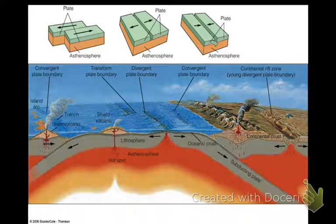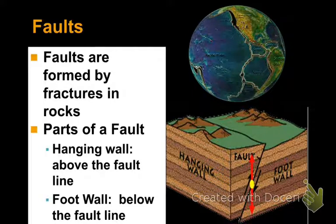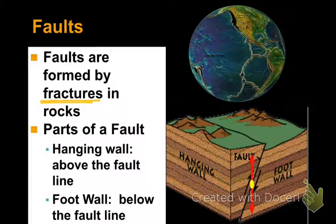So what is a fault? A fault is simply a fracture that is formed within a rock — the rock that is within the earth. There are two parts of a fault: you have a hanging wall and a foot wall. The hanging wall is above the fault line, while the foot wall is below the fault line.